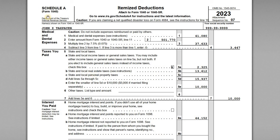For this video I want to go through a sample Schedule A for Form 1040, which is used to report itemized tax deductions for the 2023 tax year. Specifically, we want to look at real property taxes that are reported on line 5b. I want to cover what is actually deductible and what is not. So we've got the Schedule A here which we'll go through.